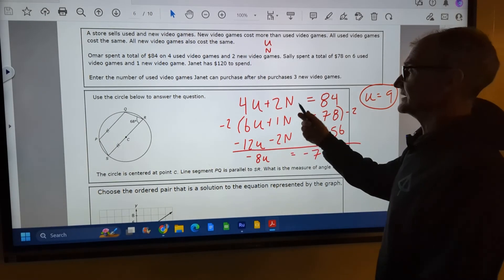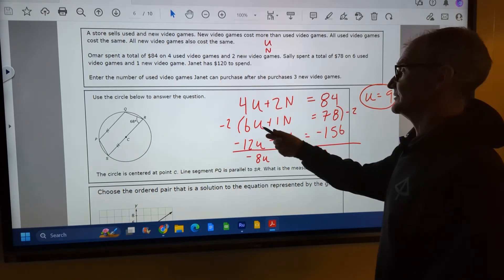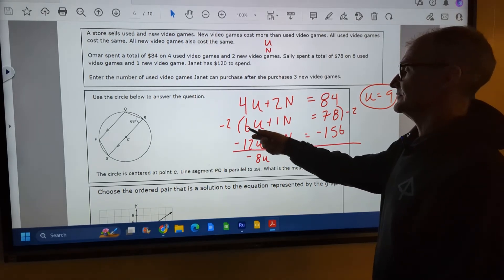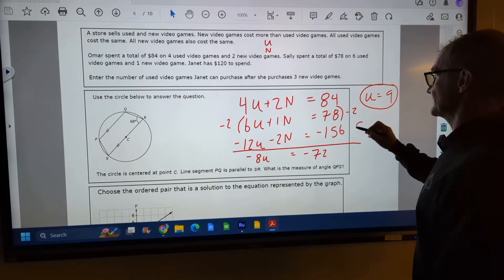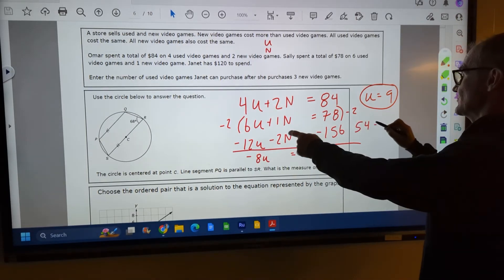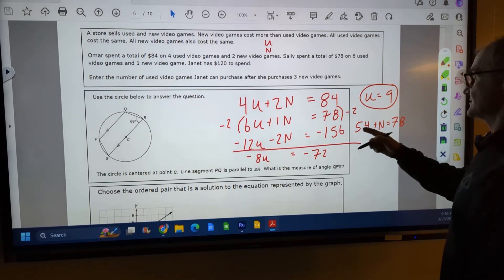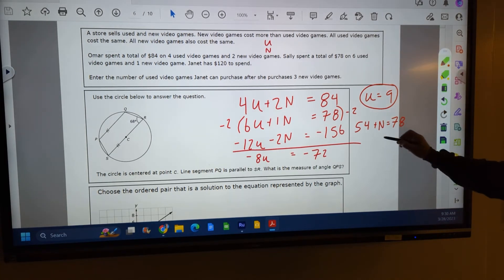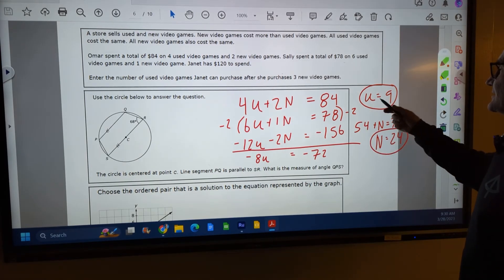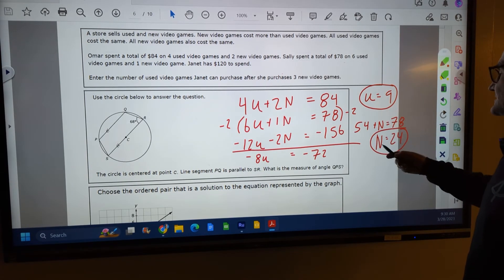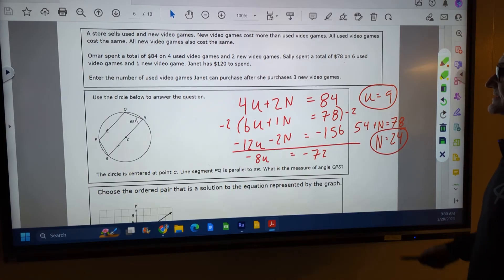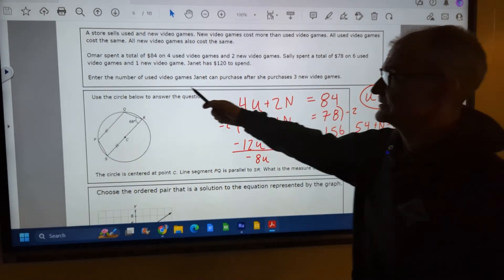Take that value for U, plug it into either equation. I'll just plug it in here, it'll be the easiest. Six times U, six times nine, fifty-four plus one N is equal to seventy-eight. Subtract fifty-four from both sides, and N is equal to, what is that, twenty-four. Okay, so now we have the number, how much a used video game is, and how much a new video game is. Let's see if we can figure out Janet's deal here.